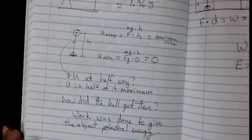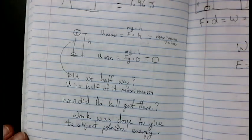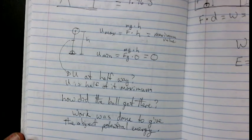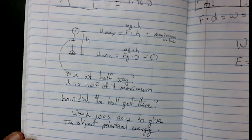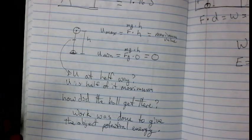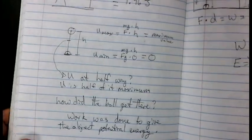And work is also done when we release the object. So once the potential energy is let go, then work is done, and the energy is changed into a different form. So we'll see that more in the next unit, or in the next set of notes.